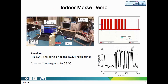Here we have an indoor Morse demo. This is our tag, this is our carrier generator sending at 868 MHz, and this is our reader — a software-defined radio, specifically an RTL-SDR, a TV tuner that with the correct driver converts into an SDR providing IQ samples to the computer. We measure a temperature value in the microcontroller — for example, 28 degrees — translate it into a Morse sequence, and produce the corresponding waveform at the microcontroller output to control the switch. At the receiver we obtain a matching waveform. We can verify that the signal sent from the microcontroller matches the received signal, demonstrating Morse code communication. The distance between tag and reader was half a meter.